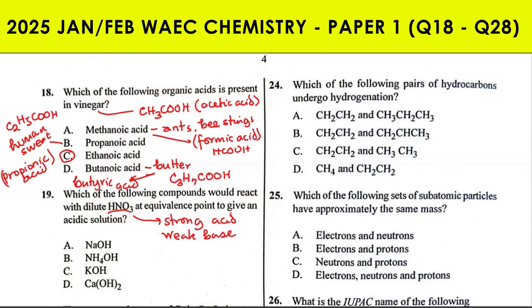A strong base will completely neutralize the HNO₃ and the solution obtained at equivalence point will be a neutral solution. Of these options, which one is the weak base? This is strong base, this is strong base, this is strong base. Ammonium hydroxide is the weak alkaline or weak base. All other ones are strong alkalis.